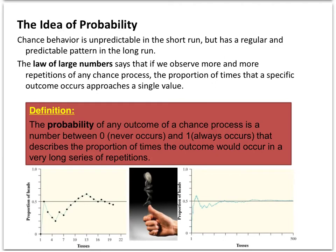The probability is, the idea is that it's unpredictable in the short run, but in the long run we can make predictions that will stand up over time. The law of large numbers says that if we observe more and more repetitions, the proportion of times will approach a single value. I would write this definition down in your composition notebook. The probability of any outcome of a chance process, as a number between zero, which never occurs, and one, which always occurs. And it describes the proportion of times the outcome would occur in a very long series of events. So write this definition down in your composition.